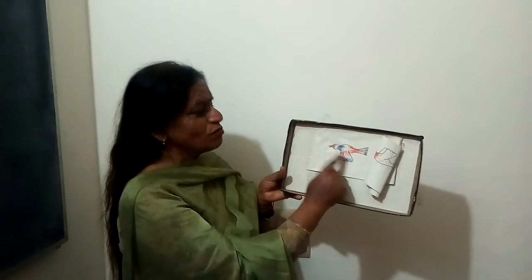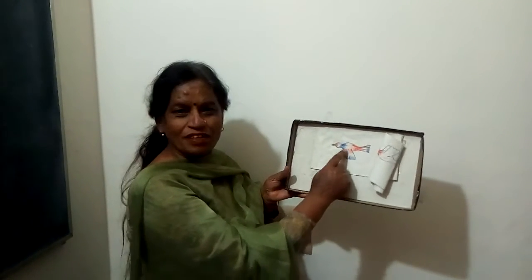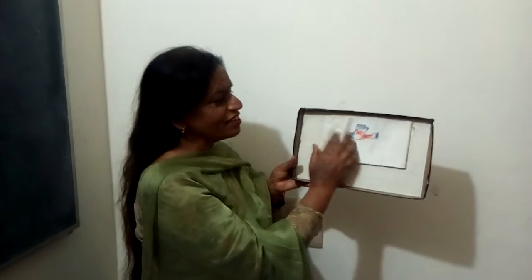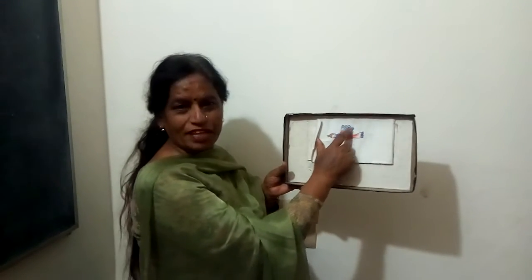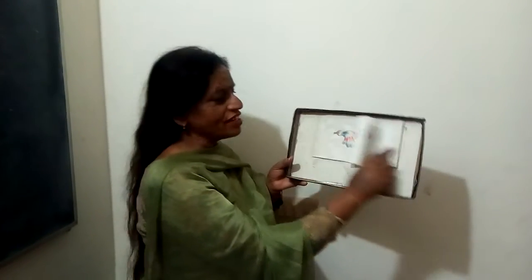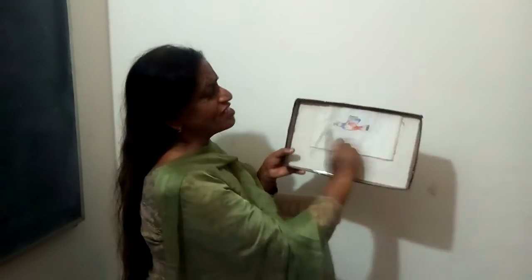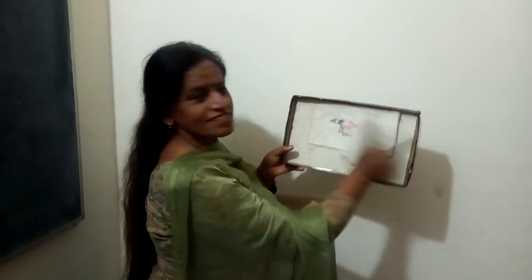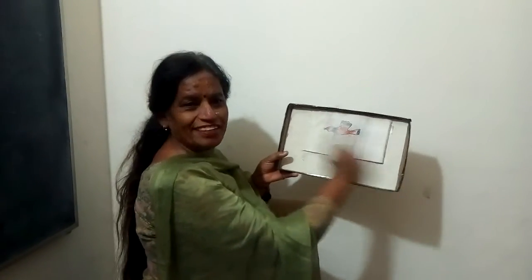Persistence of vision. Now, this bird has wings on the lower side and the other wings on the upper side. But when I move this, you see that bird is seen as it is flying.